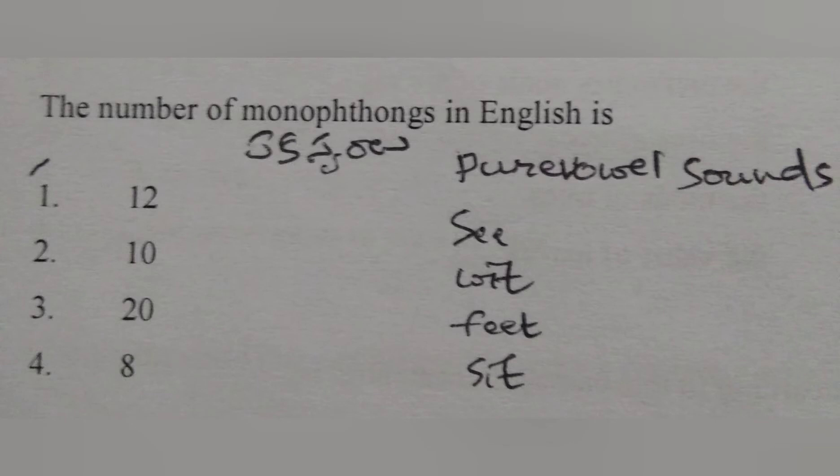The number of monophthongs in English is — monophthongs means single vowels (ekaswaralu). Their other name is pure vowel sounds. In English, how many pure vowel sounds or ekaswaralu or monophthongs are there? Let's look at examples.